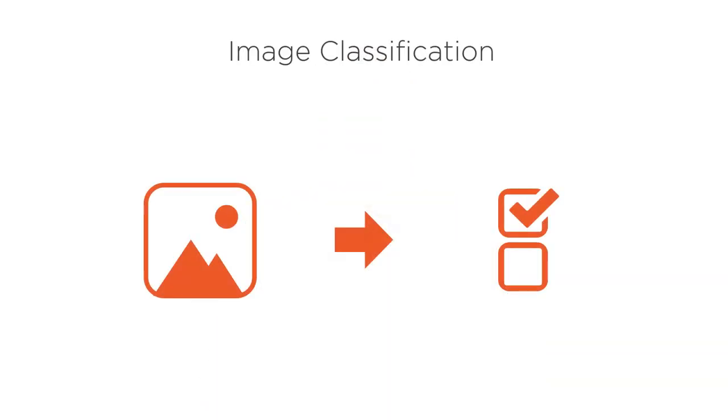First, we have image classification. Image classification allows us to assign an image to two or more labeled categories. Essentially, it answers the question, what is contained in this image?